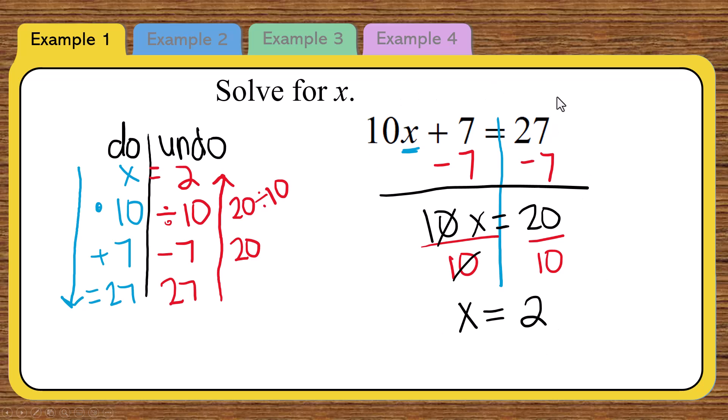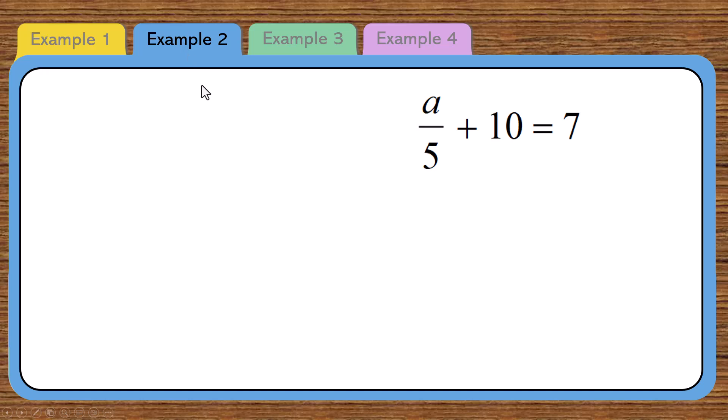At some point, you're going to get good enough that you can do this without a do undo table. But I love these do undo tables. They just lay it out for you ahead of time. It's like a little blueprint for what you're going to do. Let's do example 2. Looks a little different.